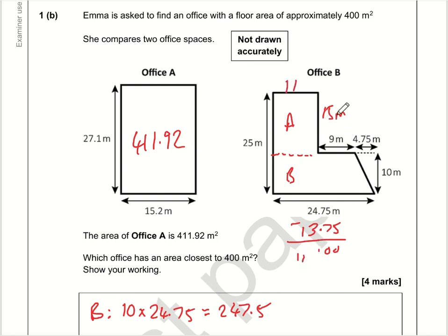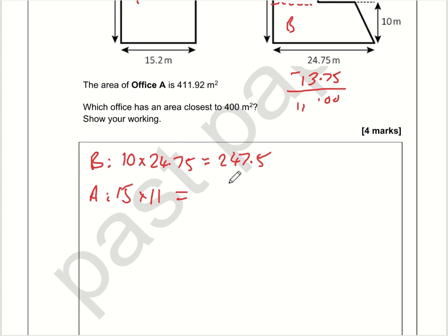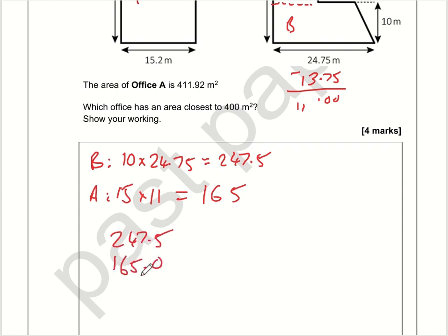So rectangle A is 15 times 11. Using the shortcut for the 11 times table — split the 15 into 1 and 5, then add them: 1 plus 5 is 6, giving 165. Now A and B combined is 247.5 plus 165.0. Adding these: 0.5, then 7 plus 5 is 12 carry 1, 10 plus 1 is 11 carry 1, giving a total of 412.5.